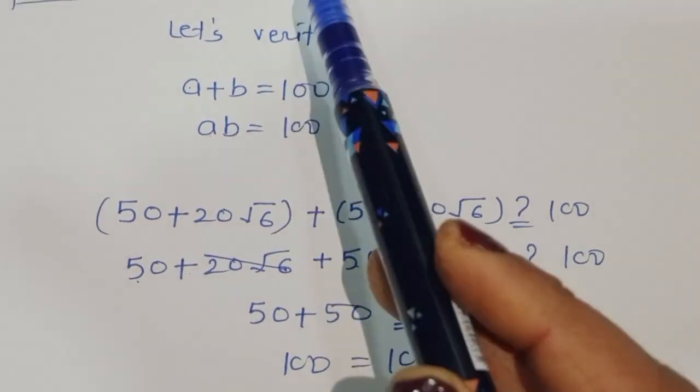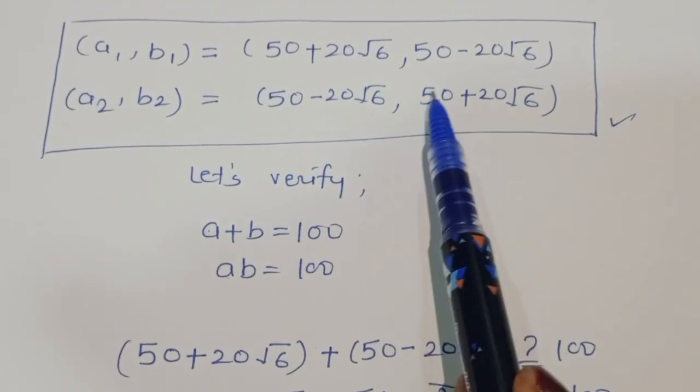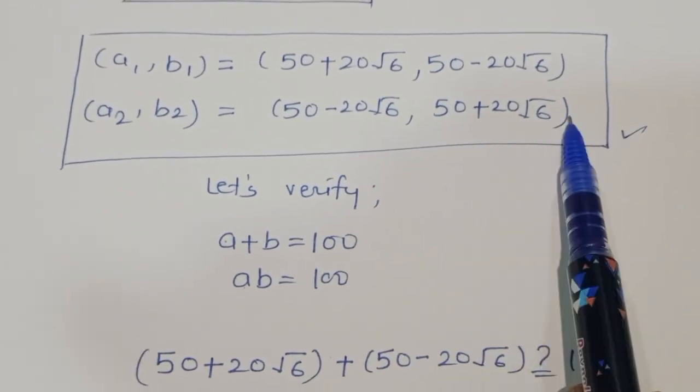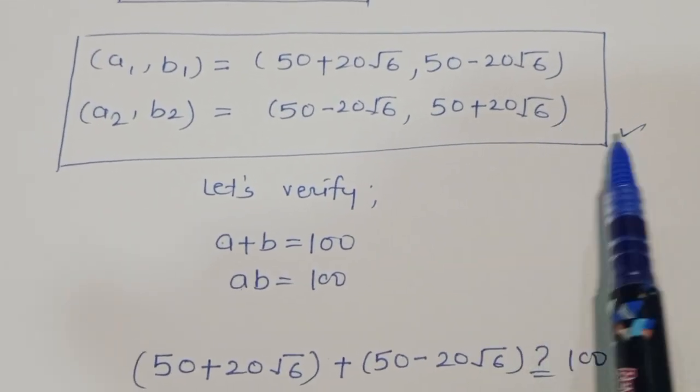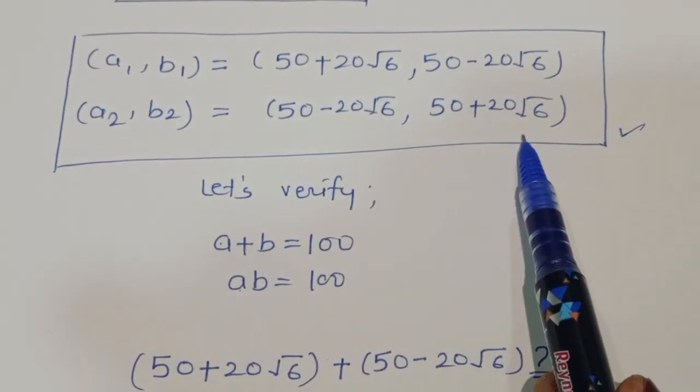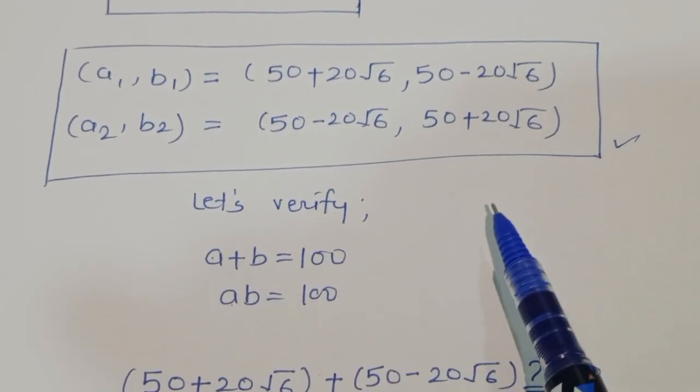Same way you can verify for a2 and b2: 50 minus 20 square root of 6 and 50 plus 20 square root of 6. This is the solution. Thank you.